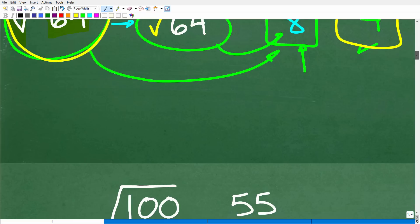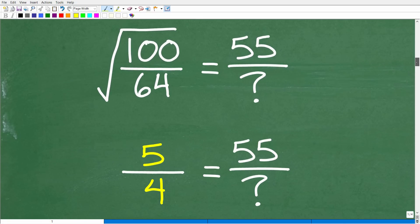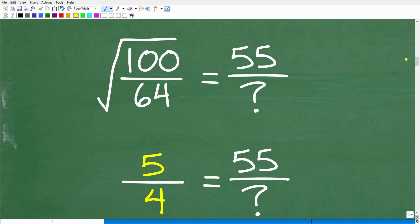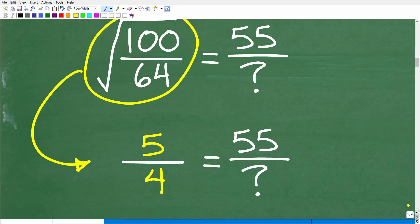All right, so let's take a look at where we're at here. We just went from this expression, the square root of 100 over 64, and now we know that this whole thing here is equivalent to five over four. All right, so what does that mean? Well, it means that our problem can be kind of interpreted this way, right? So instead of this whole expression here, we're going to just replace all that with five over four, and now we're looking at this problem, okay? So this is an equivalent problem and much easier. We have five over four is equal to 55 over our mystery number.